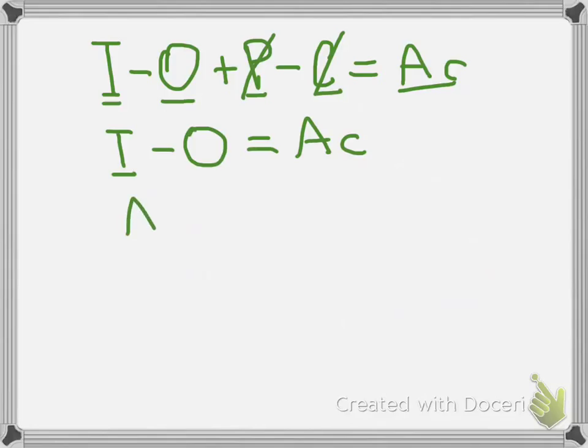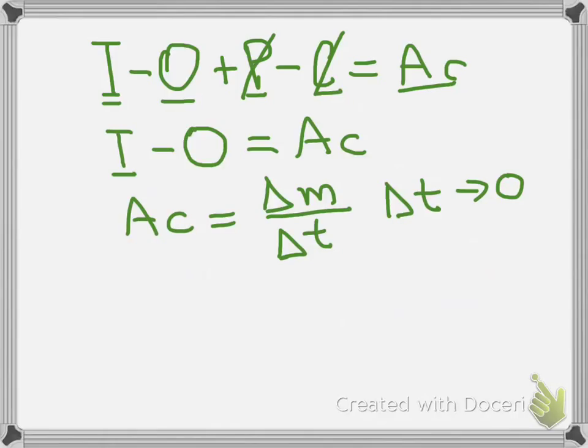Now, the term accumulation is representing the change of the mass inside our system in a certain period of time. If that period of time is very small, almost zero, then accumulation is the change of the mass in our system in a differential of time.